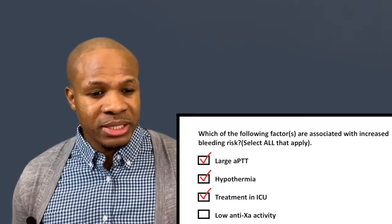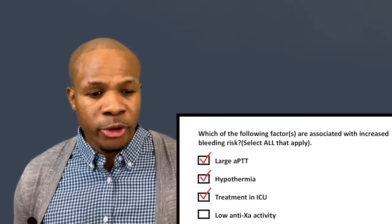The correct answers for question three are large APTT, hypothermia, and treatment in the ICU. If you have any questions or video requests, leave them in the comments below. If you're new to this channel, welcome to Intuition — a channel focused on understanding and learning rather than memorizing. Give the video a like, subscribe, and I'll see you in the next one.